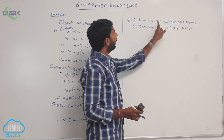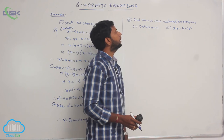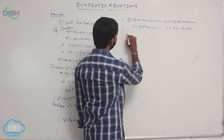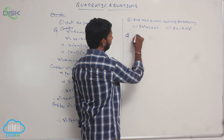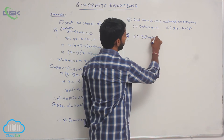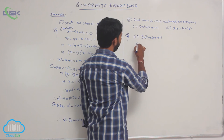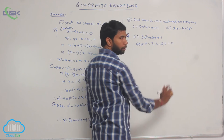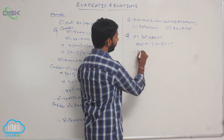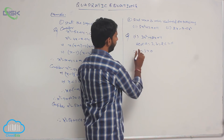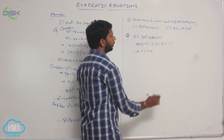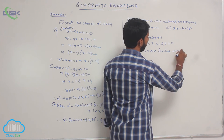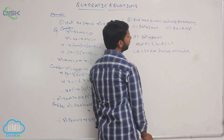Next, we find the maximum and minimum values of expressions. The first one is 3x² + 2x + 11. Here a = 3, b = 2, c = 11. Since a = 3 > 0, f(x) has a minimum value.